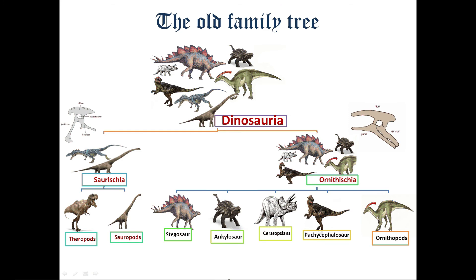Then we have Ornithischia, meaning bird-hipped dinosaurs, which is a sister clade of sauropods. Ornithischia can be subdivided into many different kinds: Stegosauria, Ankylosauria, Ceratopsians, Pachycephalosaurs, and Ornithopods.